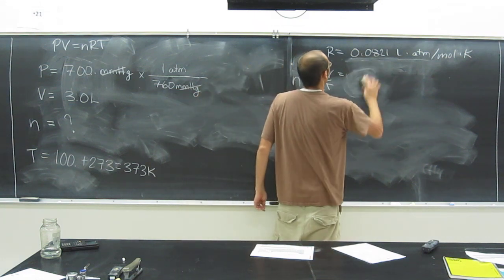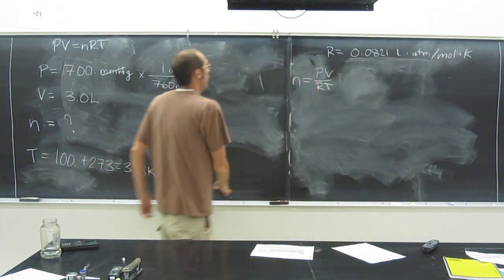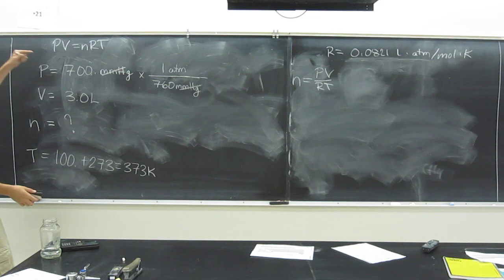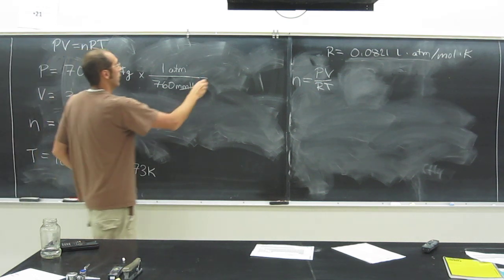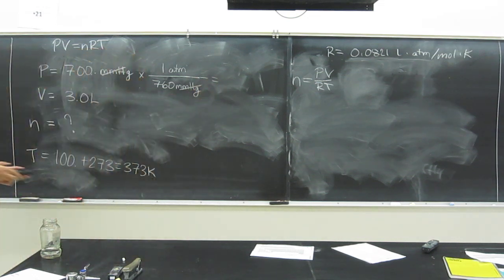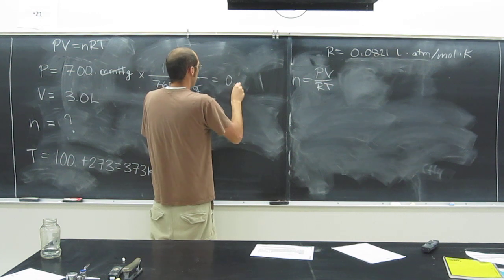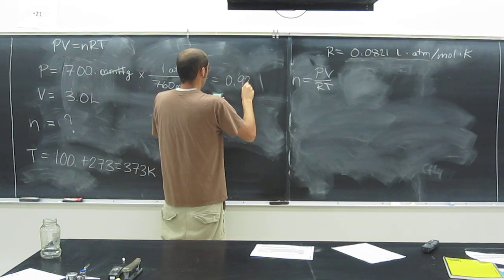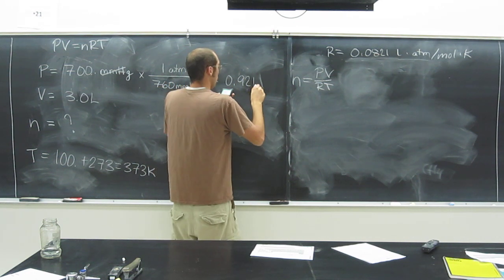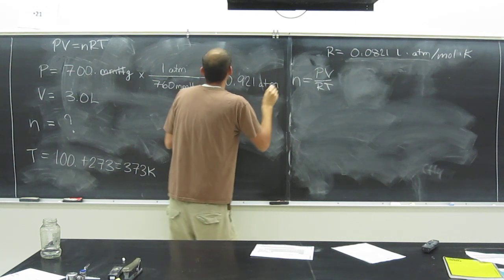Do we have all of that? P, oh, we haven't finished that one yet. So, 700 divided by 760, 0.921 ATM.